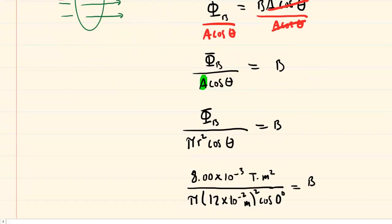So here are the known values plugged in. One thing to note is that for the radius it was given in centimeters. The radius was 12 centimeters. We need to convert that into the standard unit of meters so we multiply that by 10 to the minus 2. Also don't forget to square your radius.